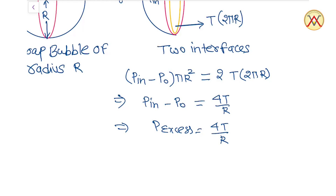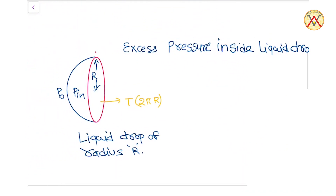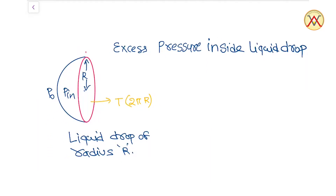Now we will move on to excess pressure inside a liquid drop of radius r. Similar to the case of a soap bubble, the pressure inside is more than the pressure outside, and the force due to excess pressure is towards left. In a liquid drop there is only a single interface, so the force towards right due to surface tension is T into 2πr, only at the outside surface. For equilibrium we can say Pn minus P0 into pi r square.